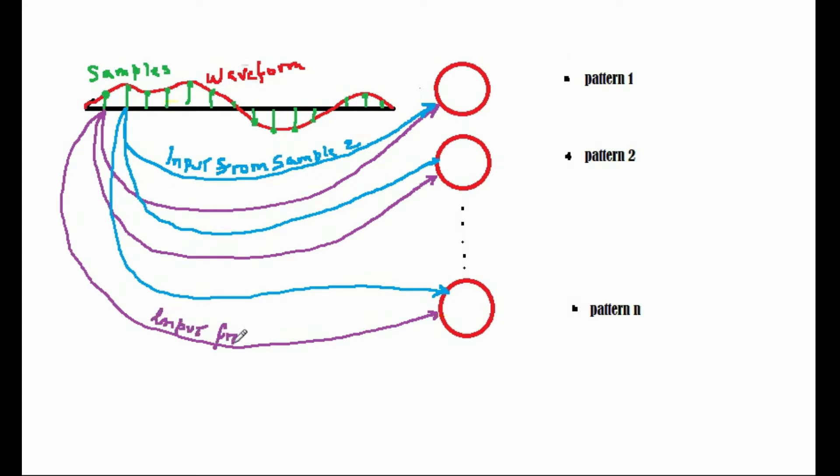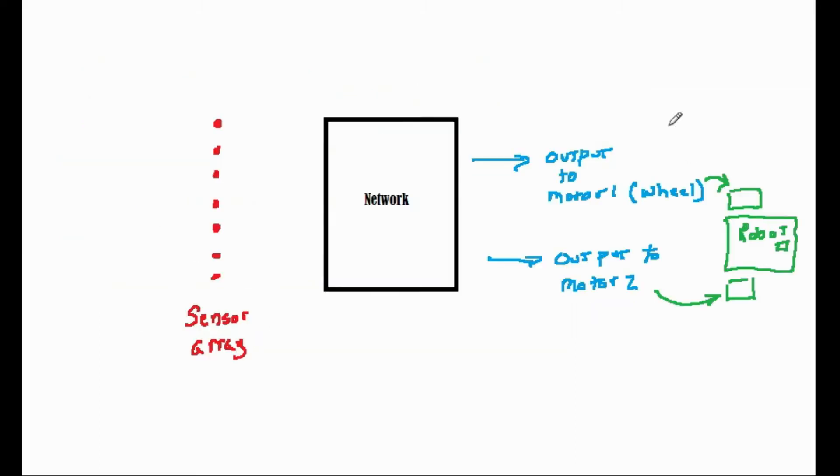Since we can train the output of a network to give any response to an input simply by changing the targets, the outputs don't necessarily have to indicate which pattern is at the input. They could produce any sort of desired output.